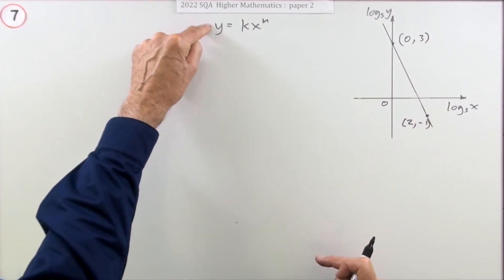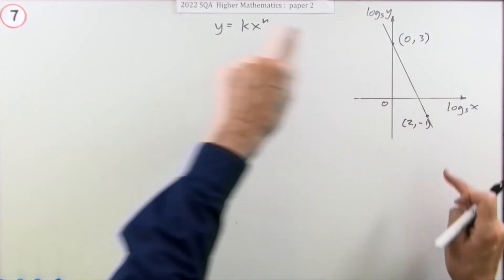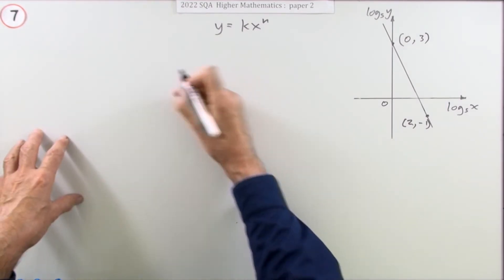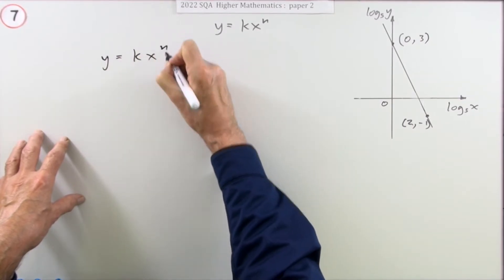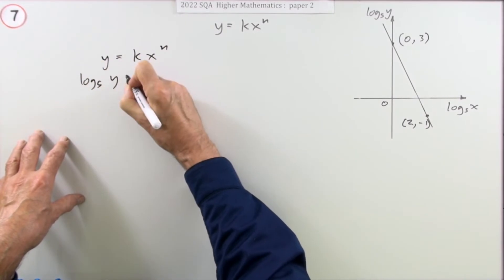Well, there's two ways. You can either start with this and go to a line, or start with a line and go to this. I think I'll start with this and go to the line. There's all sorts of different ways, so if you start with that equation, y equals k x to the n, and you take log base 5 of both sides.